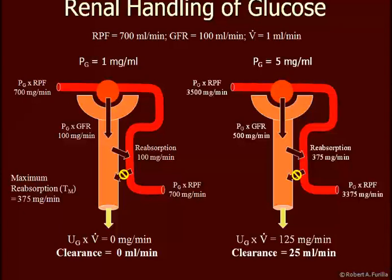Let's increase the plasma concentration to 5 milligrams per milliliter — 500 milligrams per deciliter. Now we have 3,500 milligrams per minute flowing through the arterial circulation. GFR is still 100 milliliters per minute, so our filtration rate is going to be 5 times 100, or 500 milligrams per minute. Unfortunately, we can only reabsorb 375 milligrams per minute back into the circulation. There's no secretion of glucose, so we end up with 500 minus 375 — that's 125 milligrams per minute of glucose coming out in the urine. If we take that 125 and divide by the plasma concentration, we have a clearance of 25 milliliters per minute.